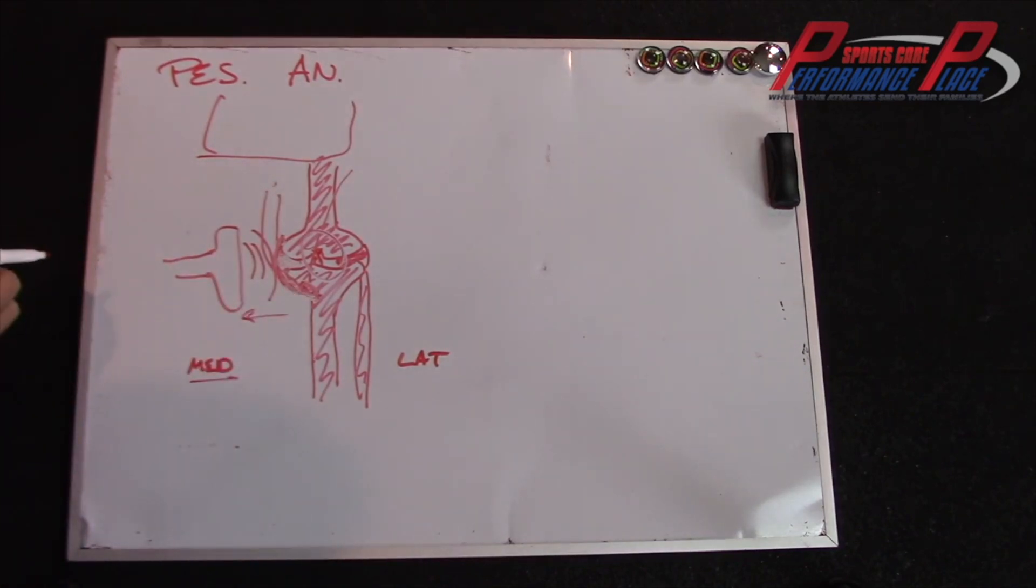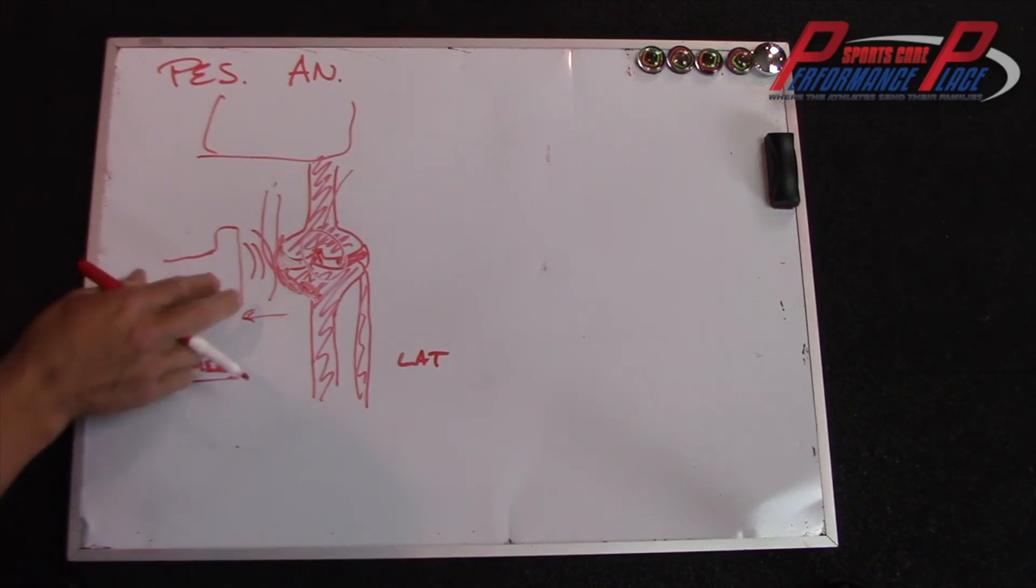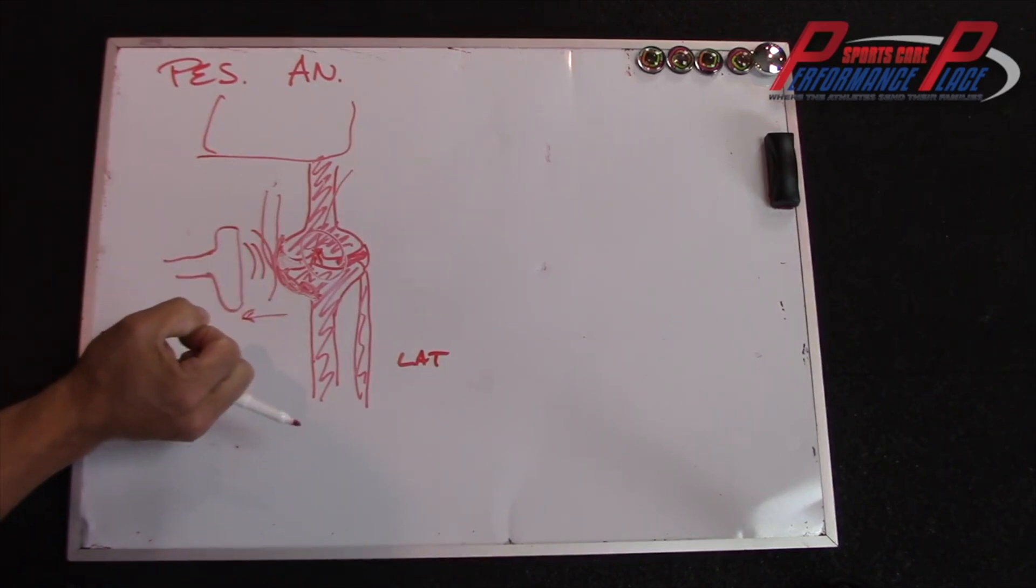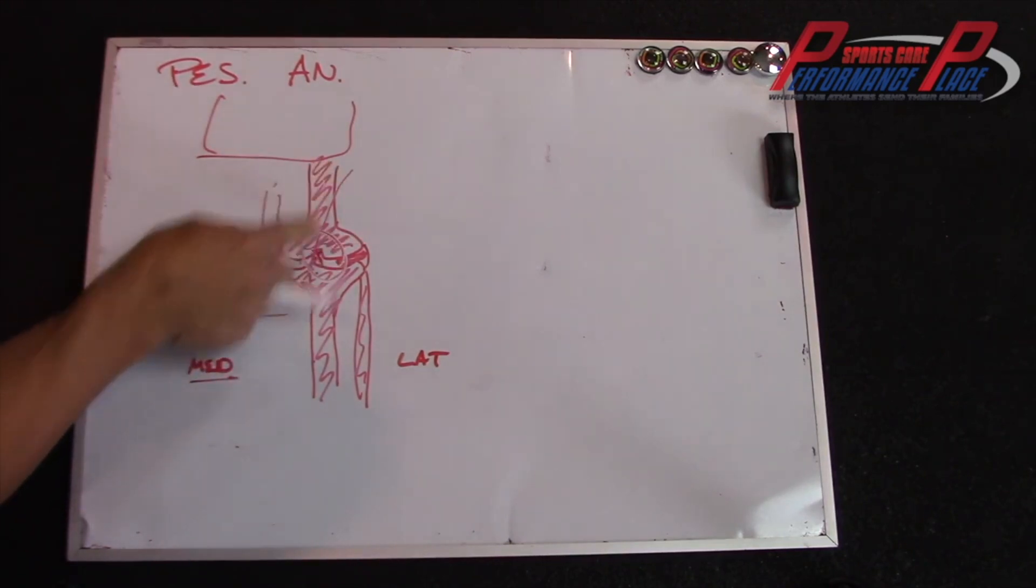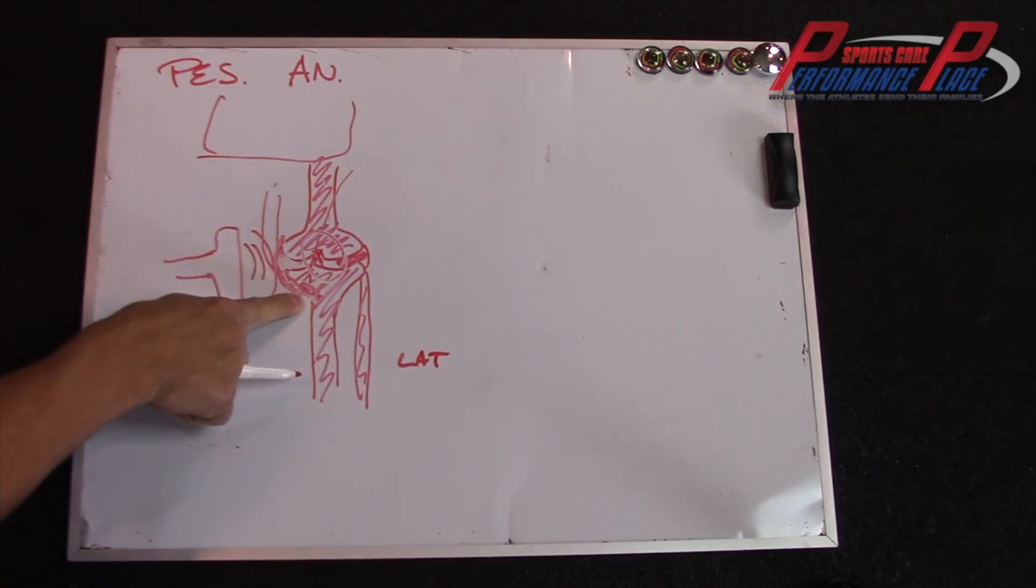So here's the thing with it: going through the exam that I showed you earlier, we're basically ruling in this versus ruling out this stuff because it's so close in proximity.